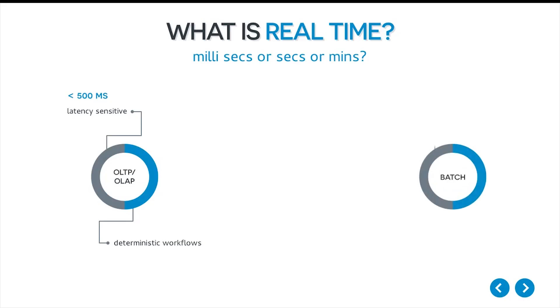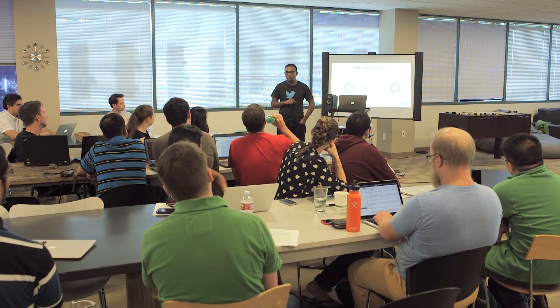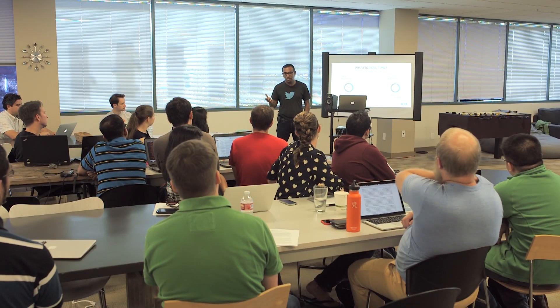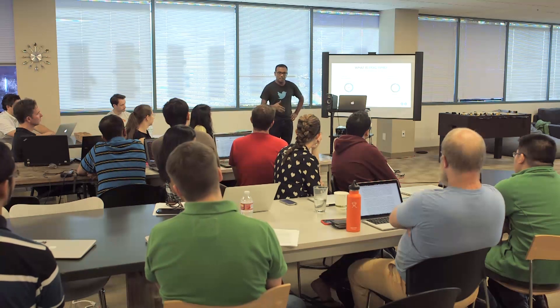On the other end of the spectrum is batch analytics, which takes many hours and days. It is characterized by high throughput. The reason batch takes a long time is because of disk I/O — you are merging through so much data, and disks have a limitation of around 100 megabits per second. To overcome that limitation, we employ multiple disks so data can be read simultaneously in parallel. When there is a lot of data across many disks, it takes hours and days, making throughput very important for batch analytics. Batch analytics is mostly used for ad hoc queries.